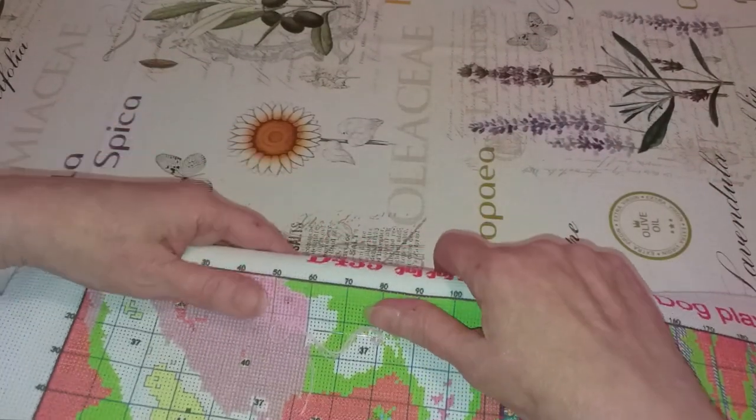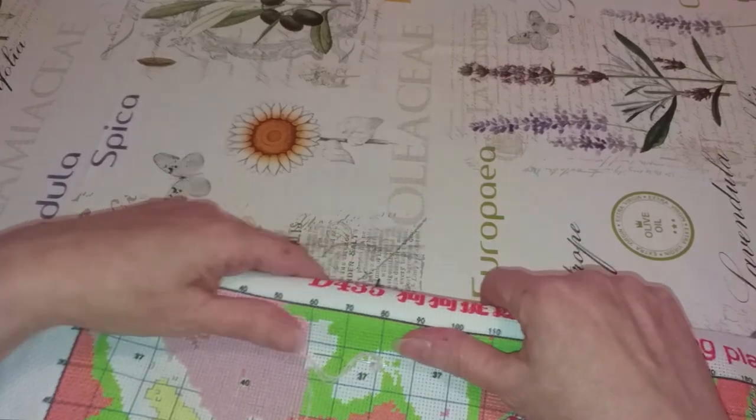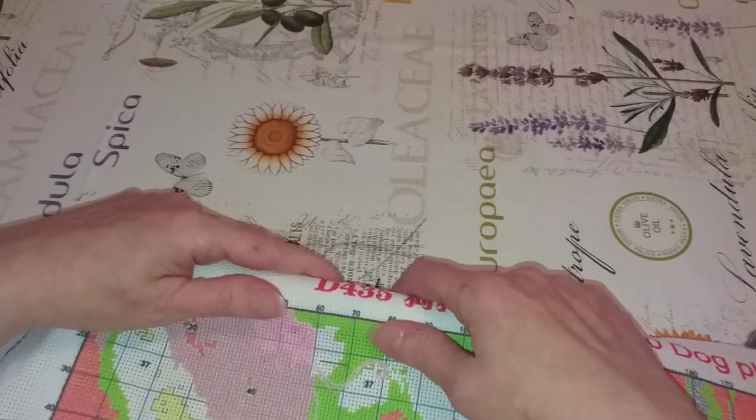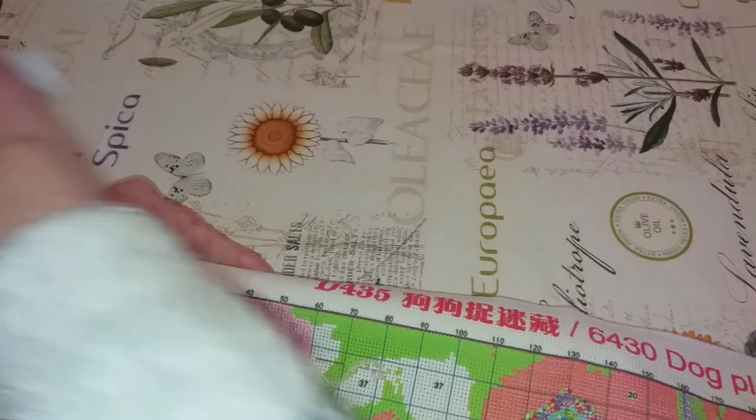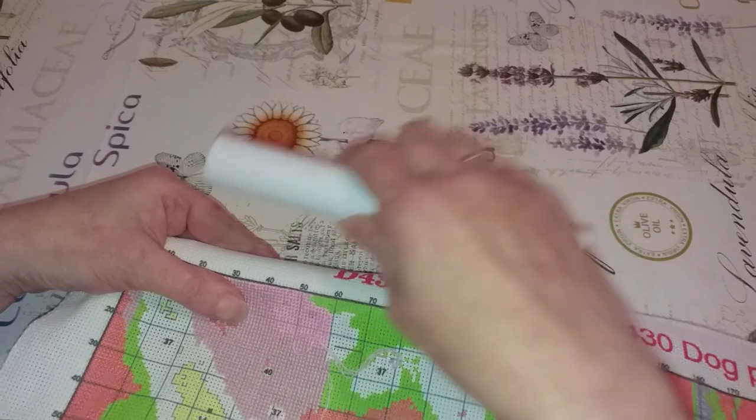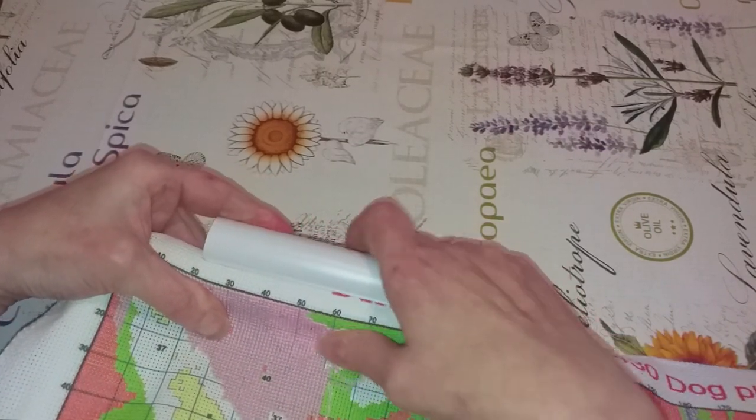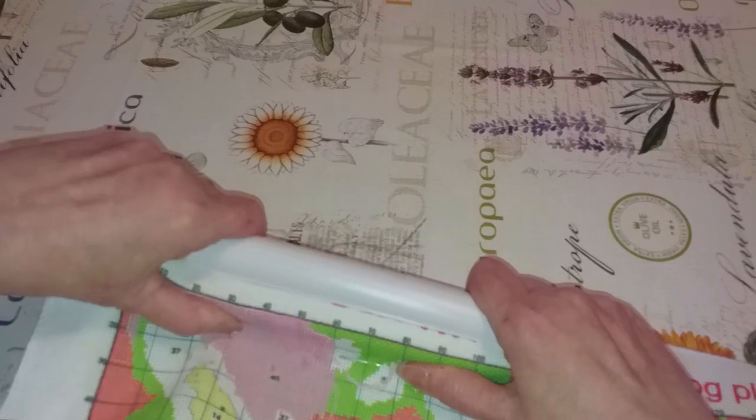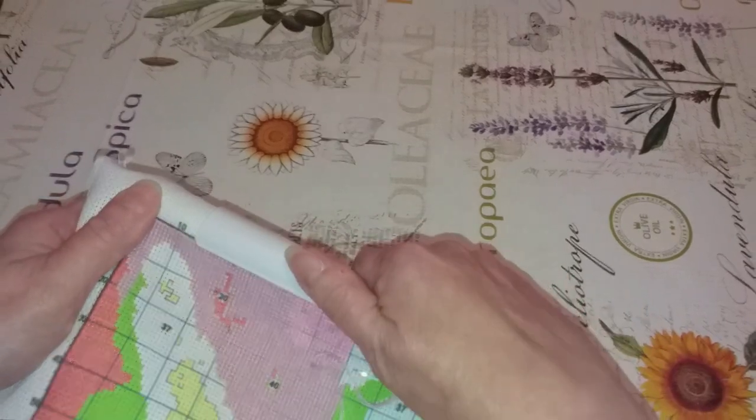Donc, on va faire comme ça, et on va relever les morceaux, les endroits ici. J'essaie que vous voyez. Voilà, comme ça. Donc, le premier qu'on va relever, ça va être celui-là. Je vais lui mettre une pince.